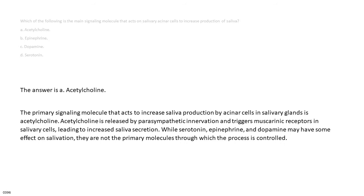The answer is a. Acetylcholine. The primary signaling molecule that acts to increase saliva production by acinar cells in salivary glands is acetylcholine. Acetylcholine is released by parasympathetic innervation and triggers muscarinic receptors in salivary cells, leading to increased saliva secretion. While serotonin, epinephrine, and dopamine may have some effect on salivation, they are not the primary molecules through which the process is controlled.